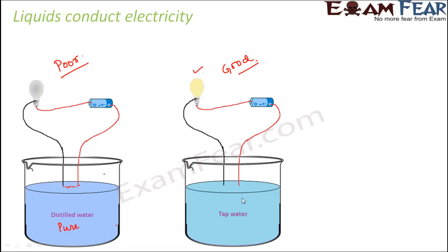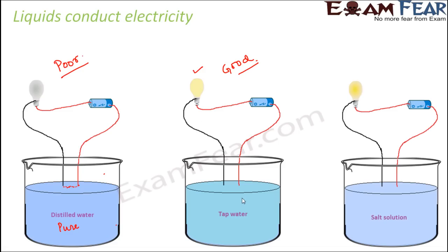Now in the same tap water, you add a little bit of salt — you are purposely adding some salt to this water. Now what do you see? You see that again the bulb glows. In fact, now the glow of the bulb is more. In the tap water case the bulb was a little dim, but here the bulb glows even more properly. So this shows that salt solution is more conducting to electricity — it is a better conductor of electricity.